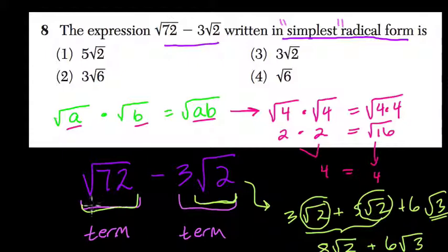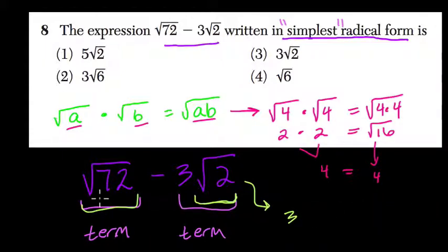So my goal is, when I'm simplifying this, to get the square root of 72 written in terms of the square root of 2. So I can actually combine this stuff.